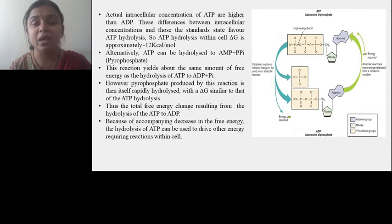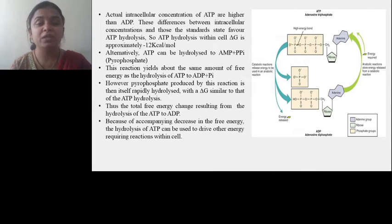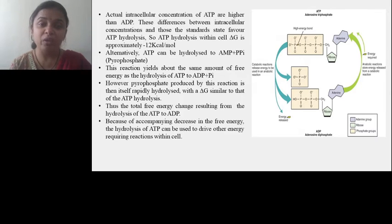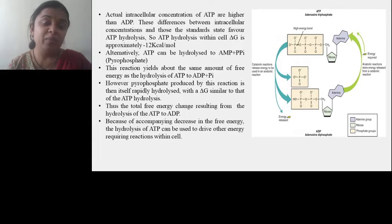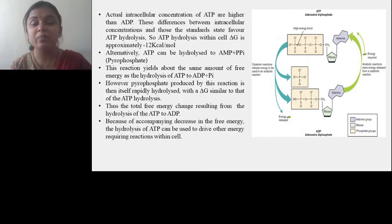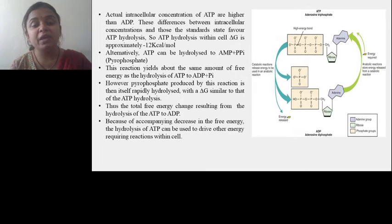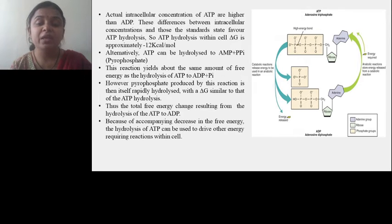Alternatively, ATP can be hydrolyzed to AMP plus pyrophosphate, that is PPi. This reaction releases about the same amount of free energy as the hydrolysis of ATP to ADP and inorganic phosphate. However, the pyrophosphate produced by this reaction is itself rapidly hydrolyzed with a delta G similar to ATP hydrolysis. Thus the total energy change resulting from the hydrolysis of ATP to AMP, accompanied by the decrease in free energy, can be used to drive other energy-requiring reactions within the cell.